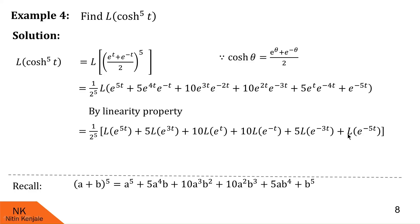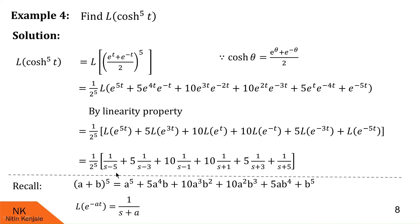All terms are exponential, so recall Laplace of e^(at) = 1/(s−a) and Laplace of e^(−at) = 1/(s+a). So: Laplace of e^(5t) = 1/(s−5), Laplace of e^(3t) = 1/(s−3), Laplace of e^t = 1/(s−1), Laplace of e^(−t) = 1/(s+1), Laplace of e^(−3t) = 1/(s+3), Laplace of e^(−5t) = 1/(s+5). This is the final answer for Laplace of cosh⁵(t).